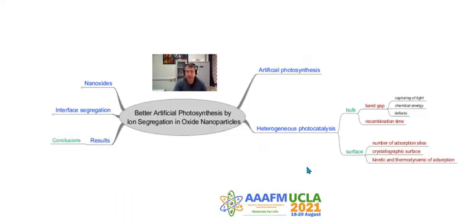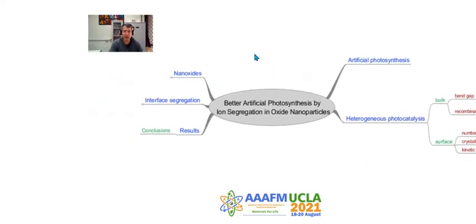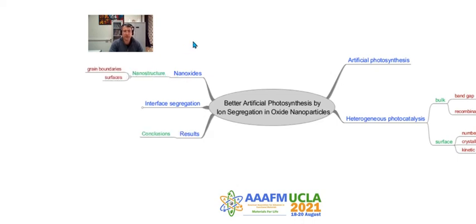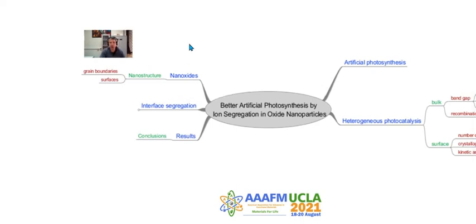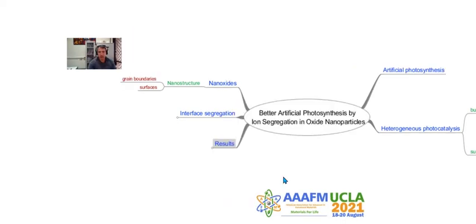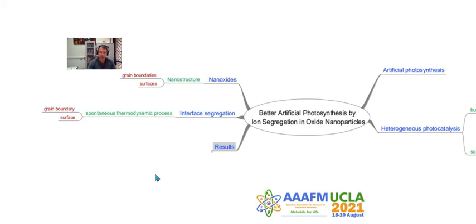To increase photocatalysis, we need a lot of surface area, so we work with nano-oxides. These nano-oxides have nanostructure with two main parts: grain boundaries and surfaces. Grain boundaries are all interfaces between solids, and surfaces are the interface between a solid and a gas or a solid and a liquid.